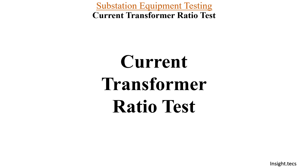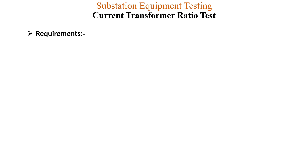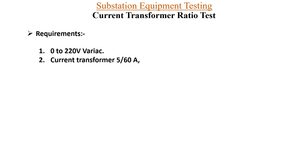Let us see how the current transformer ratio test is done and why this kind of test is required on the CT. The requirements to perform the CT ratio test are: first, a variac between 0 to 220 volts; second, a current transformer that can convert 5 amperes to 60 amperes or above; extension wires; and a clip-on meter.